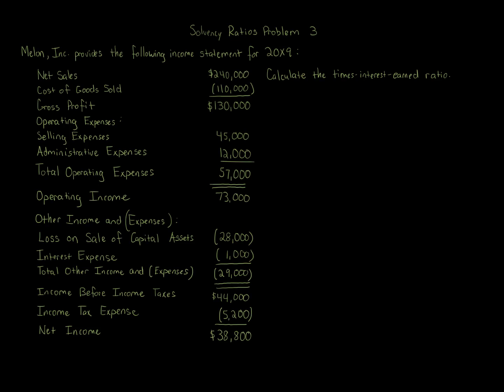Solvency ratios, problem three. Melon Inc. provides the following income statement for 20x9: net sales $240,000; cost of goods sold $110,000; gross profit $130,000; selling expenses $45,000; administrative expenses $12,000; total operating expenses $57,000; operating income $73,000. Other income and expenses: loss on sale of capital assets $28,000; interest expense $1,000; total other income and expenses $29,000. Income before income taxes $44,000; income tax expense $5,200; net income $38,800. Calculate the times interest earned ratio.